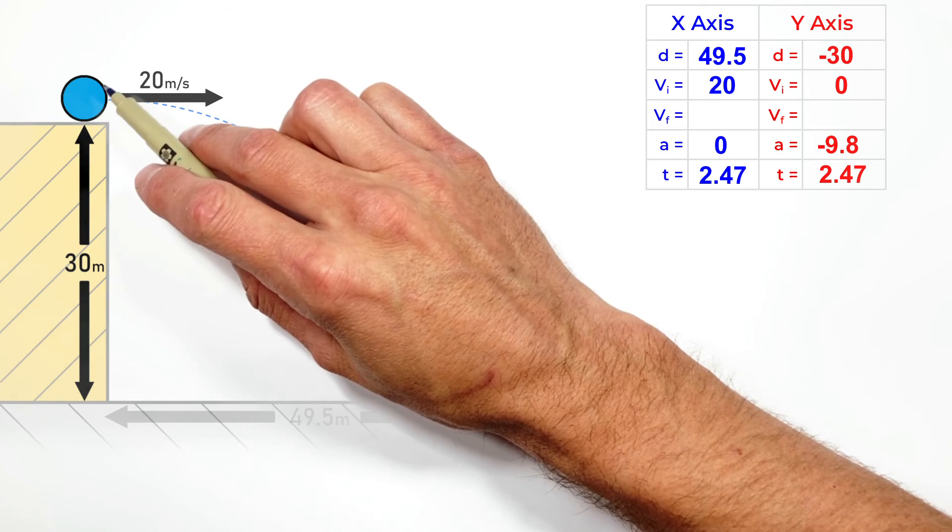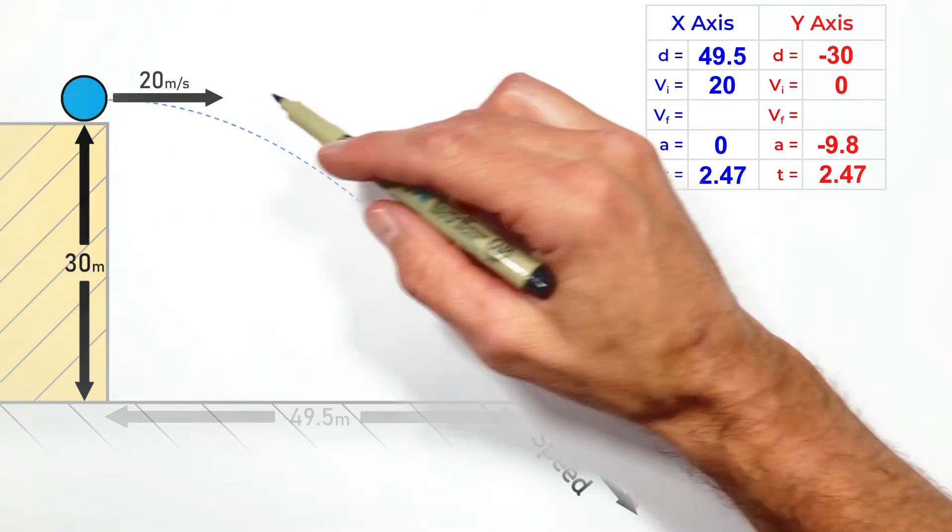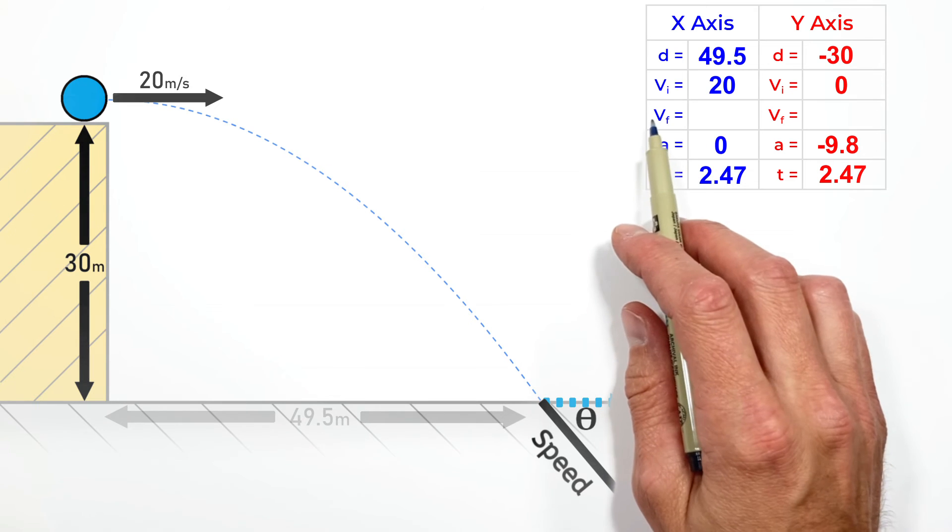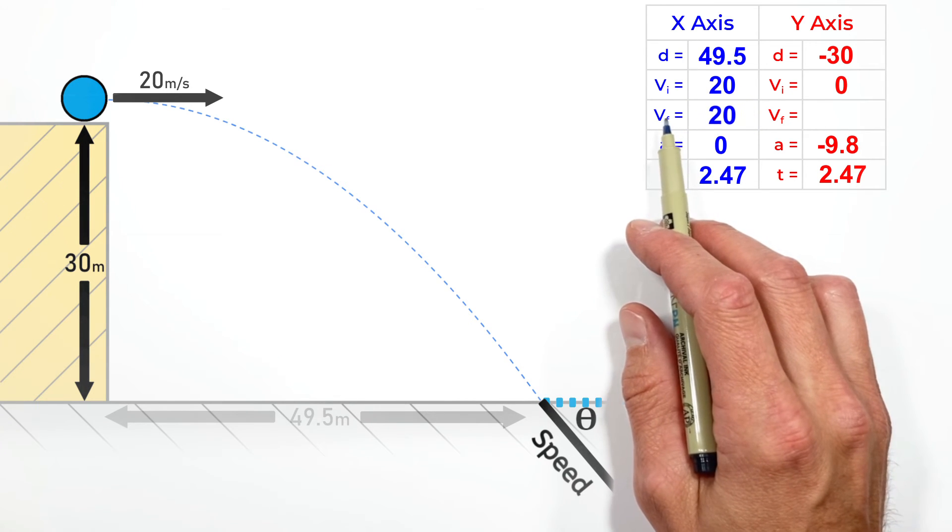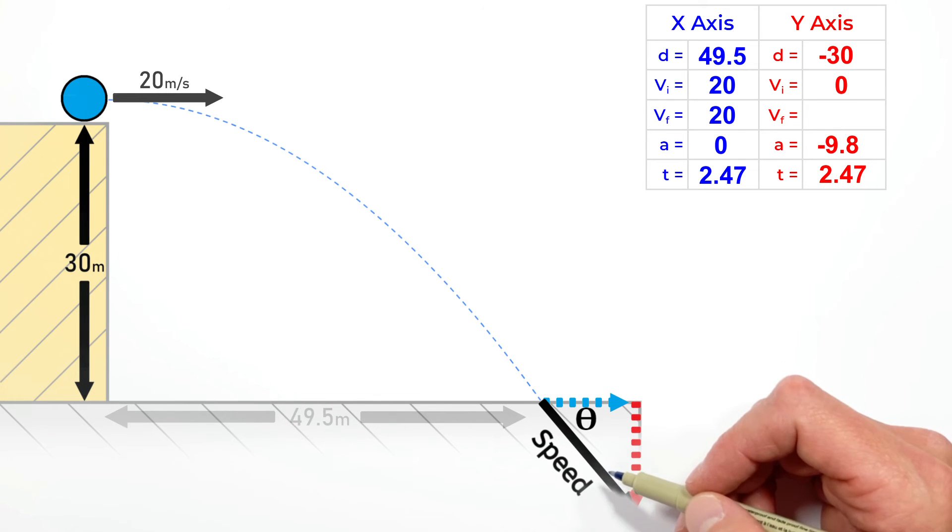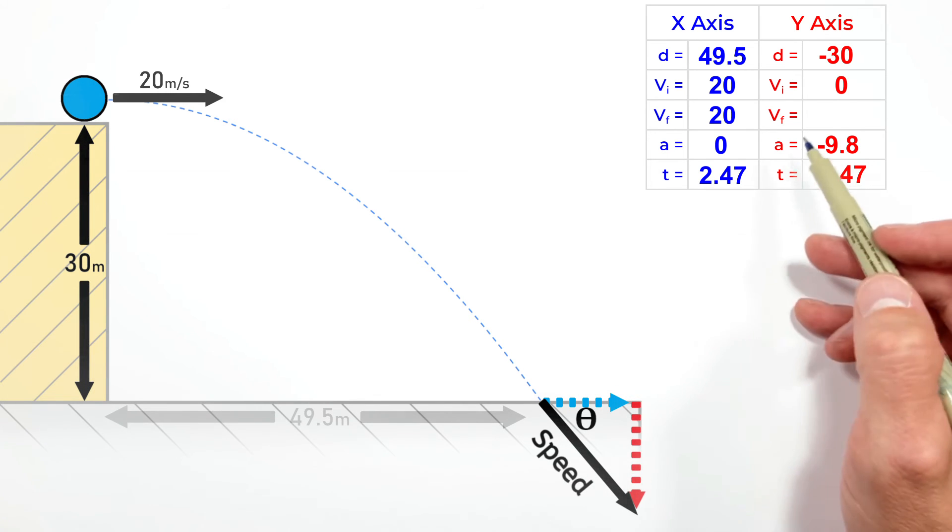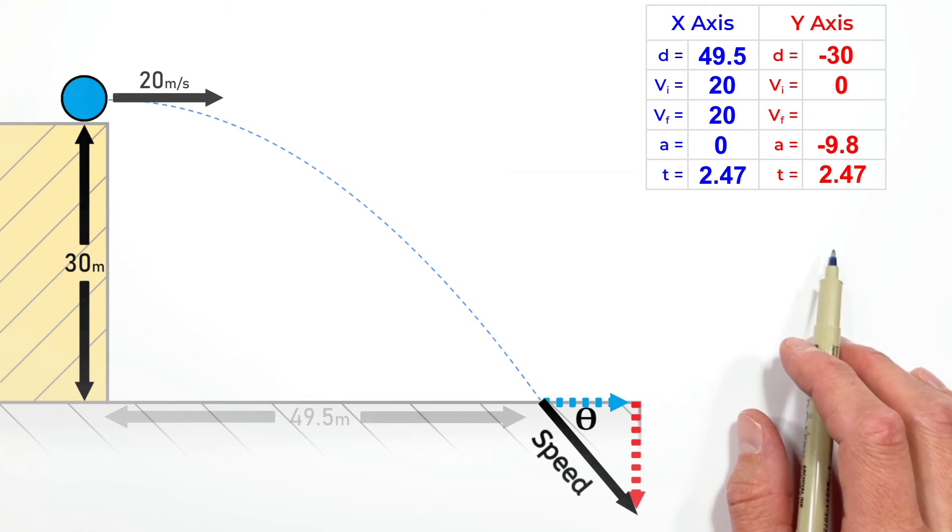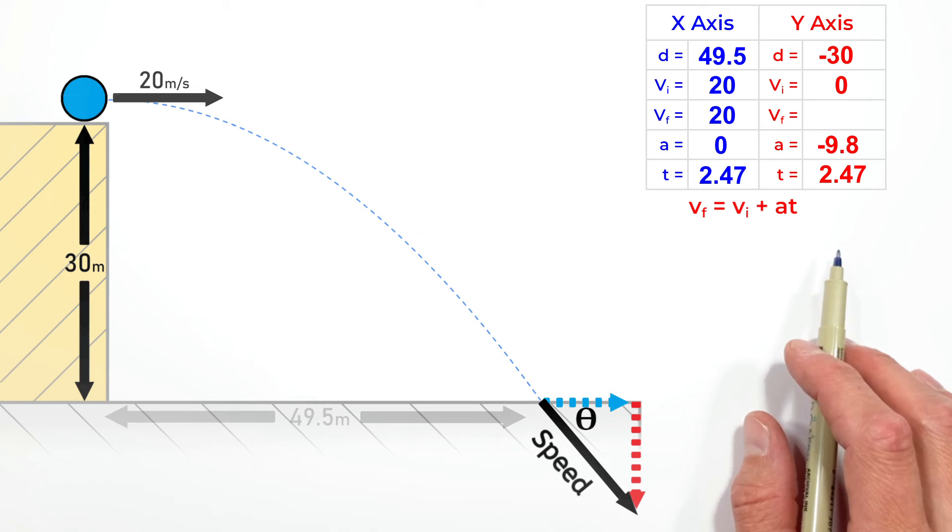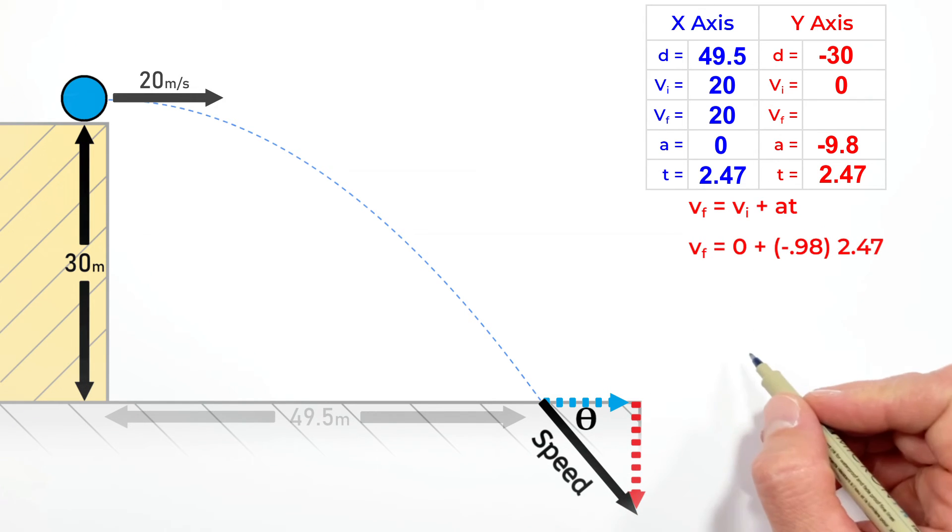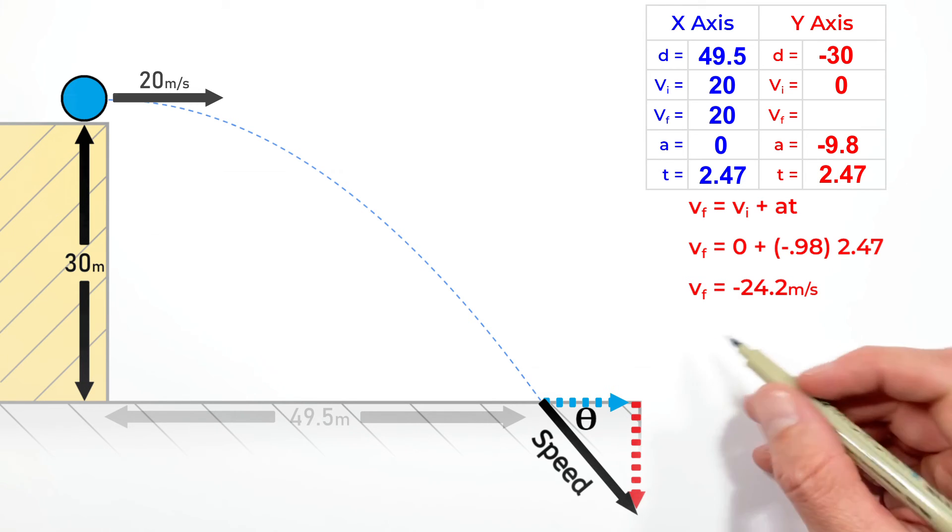Since the ball was moving initially at 20 meters per second horizontally, that never changes, so the final velocity in the horizontal axis is 20. In the y-axis, we have to do some work. Knowing the time, acceleration, and initial velocity, we can use the kinematic equation vf = vi + at and plug in the values to find the final velocity is 24.2 meters per second downward.